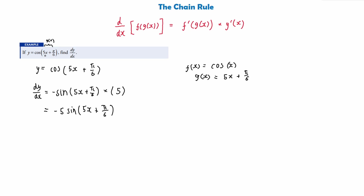To go over this one more time, because the chain rule can be quite tricky: it's to do with composite functions, so you will always have a function of another function. Here our first function is cos x and our second is 5x + π/6, so f(g(x)) gives us cos(5x + π/6). To find the derivative, we start with the derivative of the outer function — cos x becomes minus sine x — keep the bracket the same, then multiply by the derivative of what's in the bracket, which is 5, to get minus 5 sine(5x + π/6).